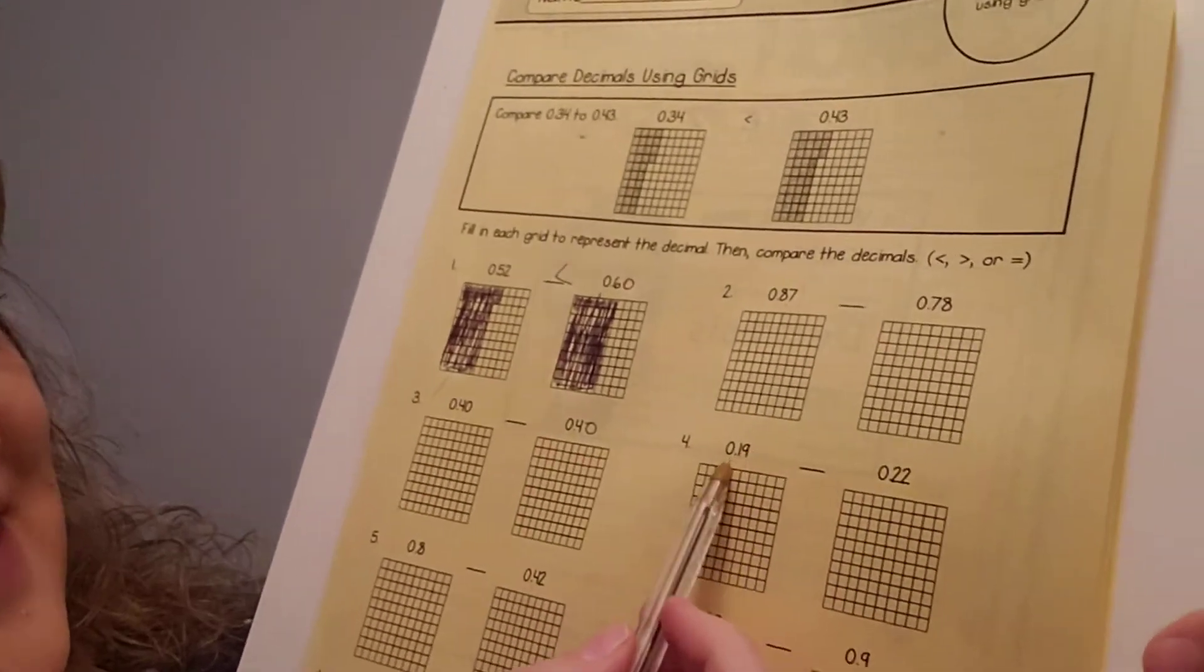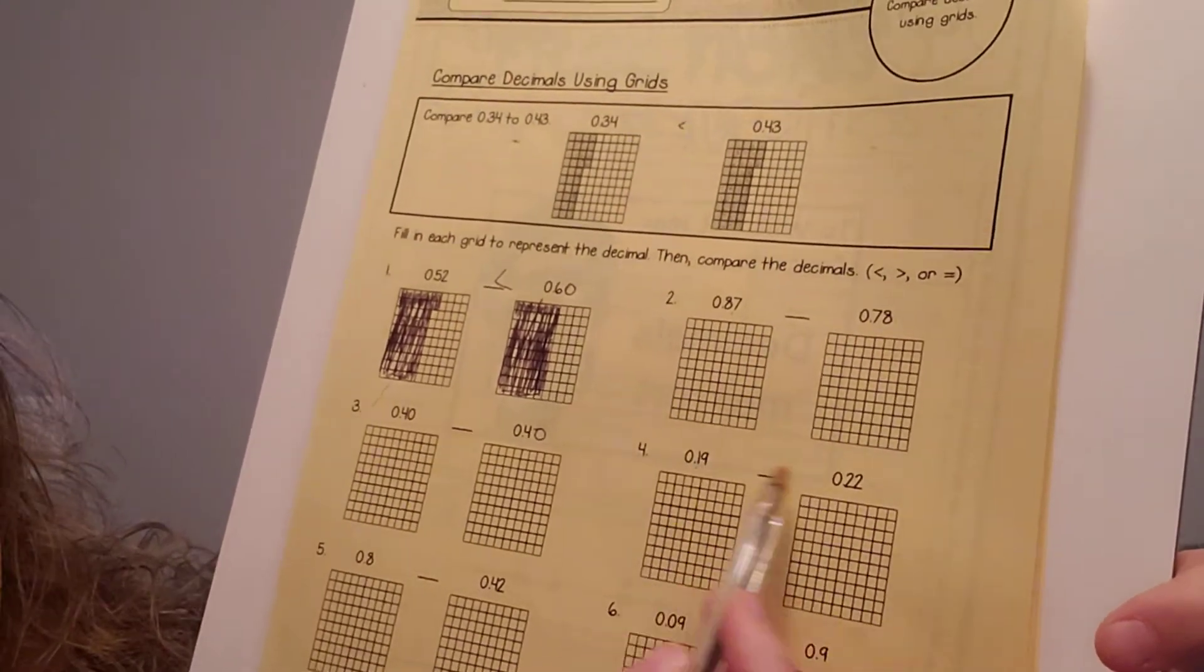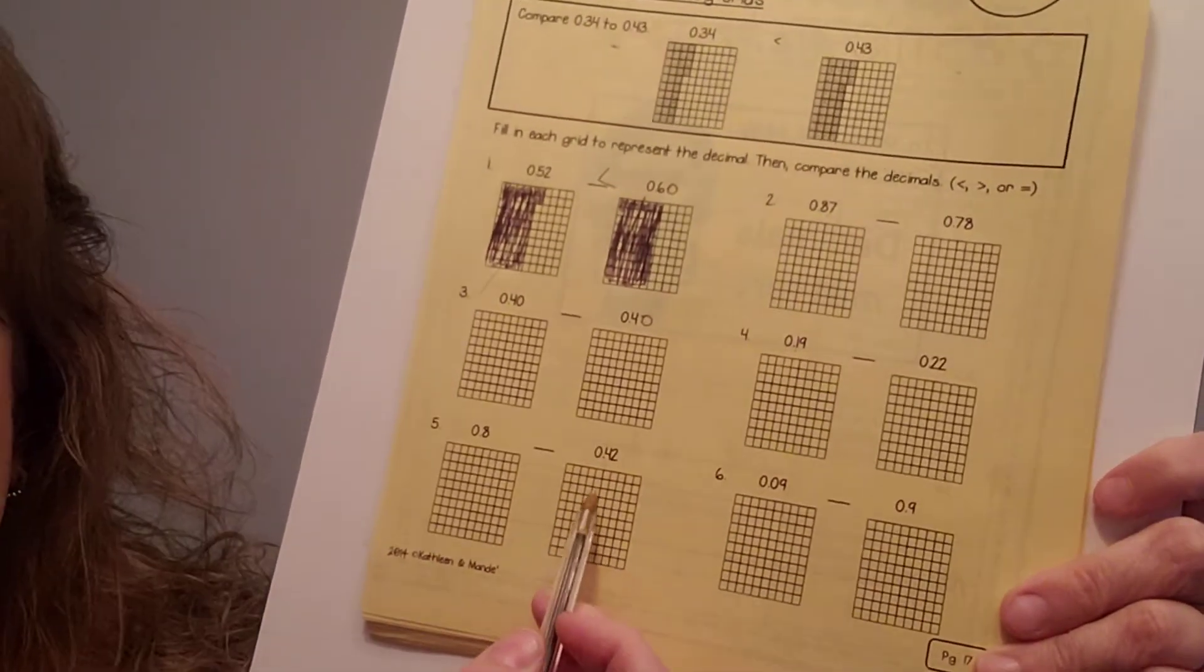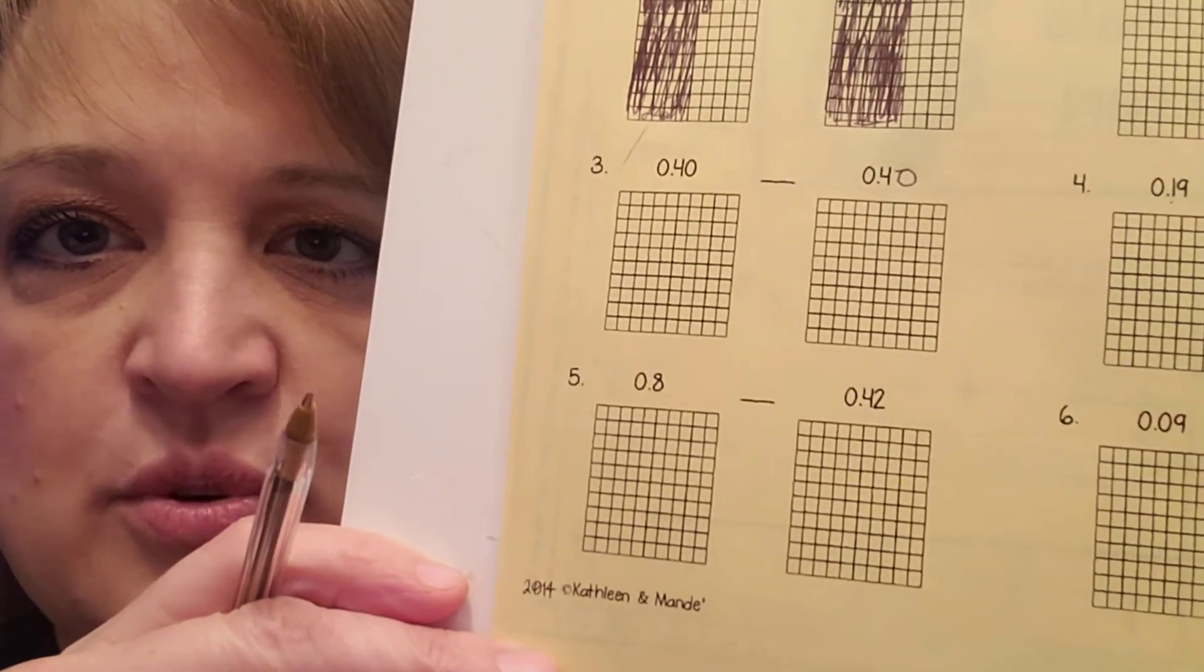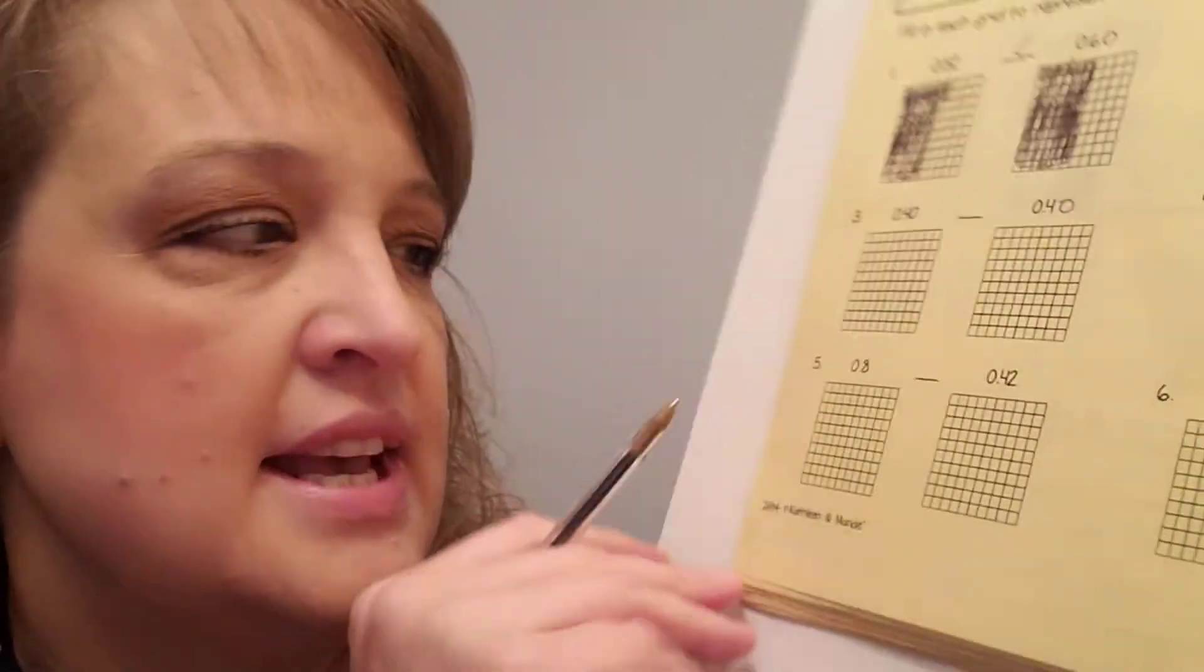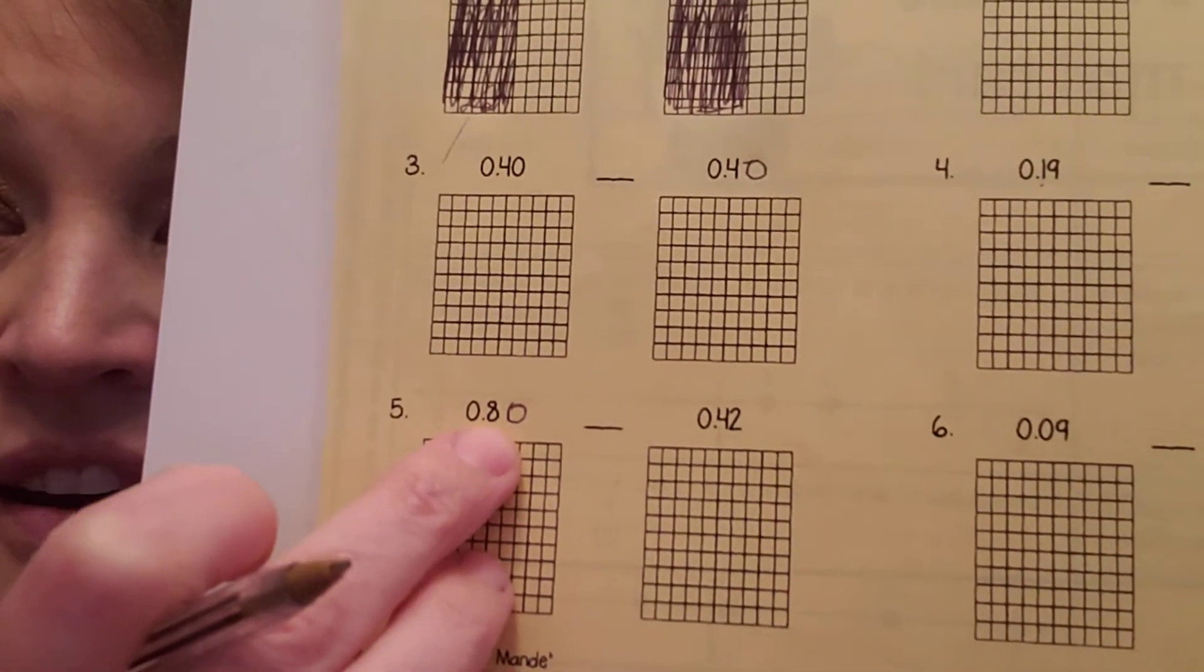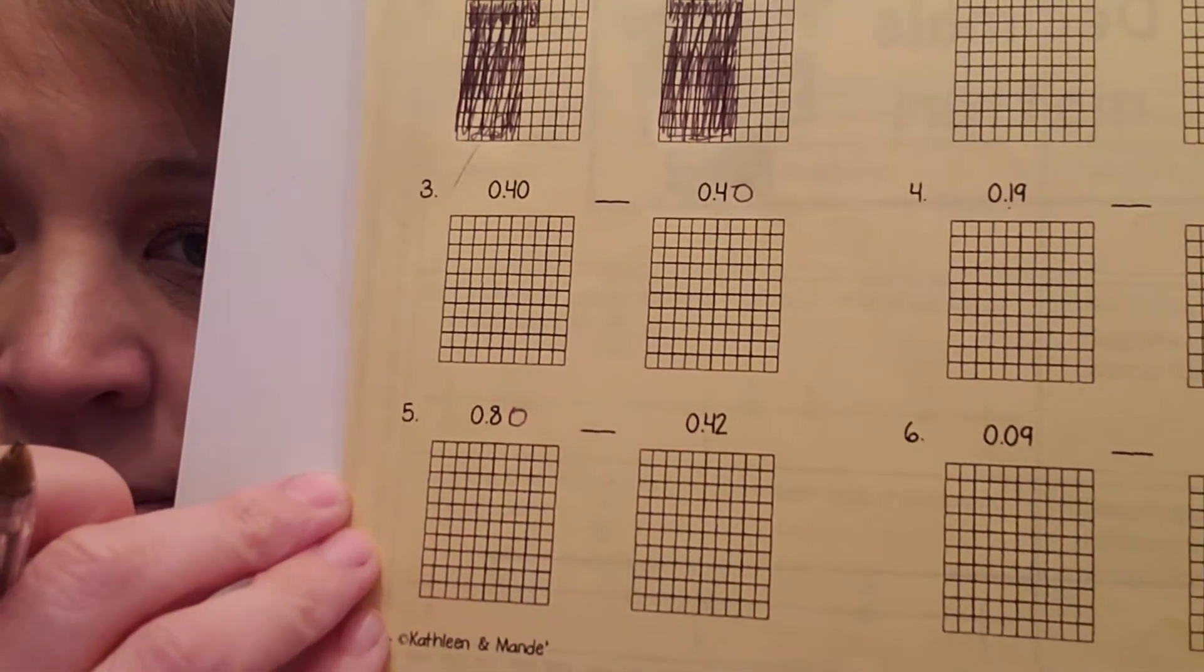Okay. Now, these two. Nineteen hundredths, twenty-two hundredths. They're both hundredths, so you can compare them. What about this one? Eight-tenths and forty-two hundredths. Is that apples to apples? Nope. That's not apples to apples. That's apples to oranges. Two different things. So, in order for me to make them apples to apples, I need to add a zero. I have to make this one into the hundredths. So, now I have eighty hundredths and forty-two hundredths.